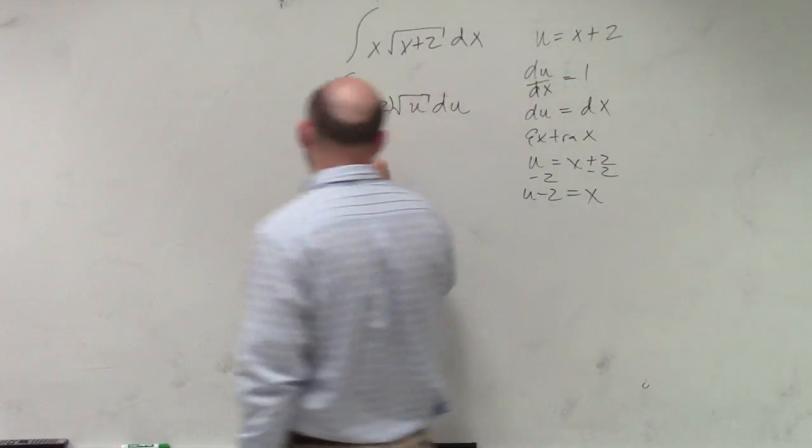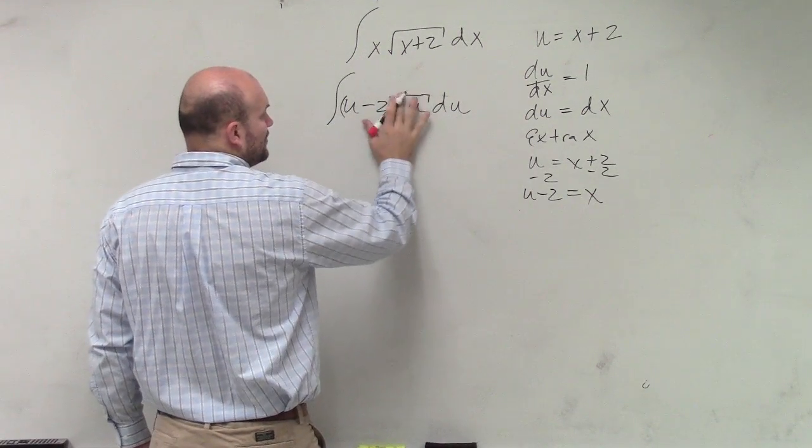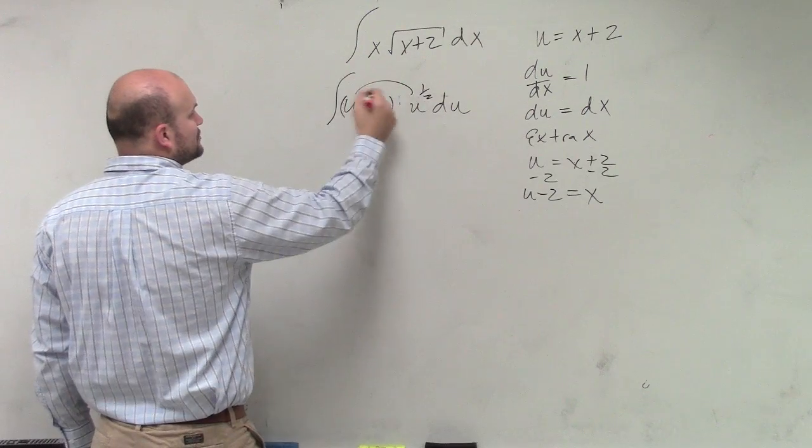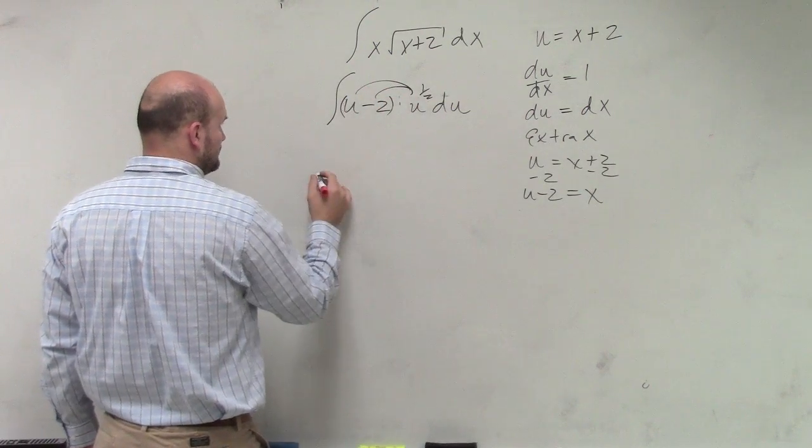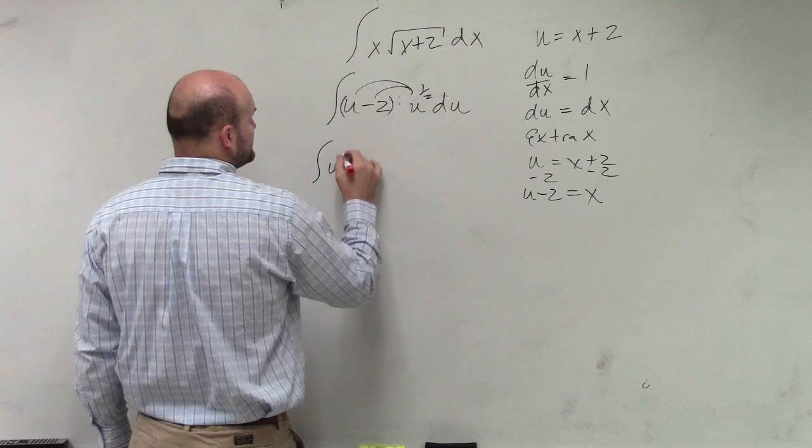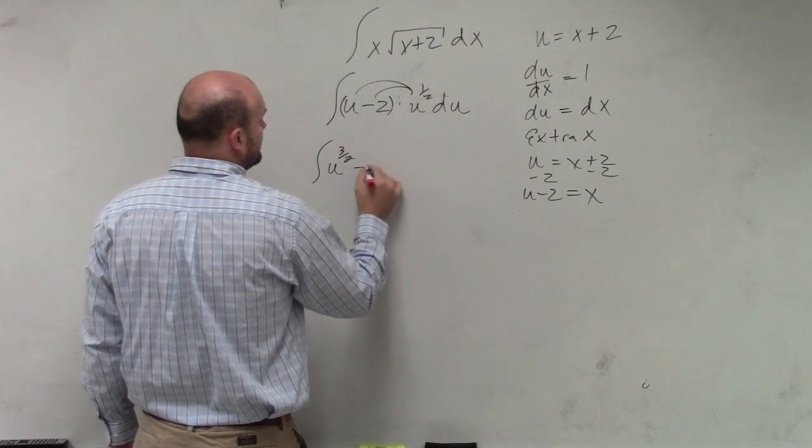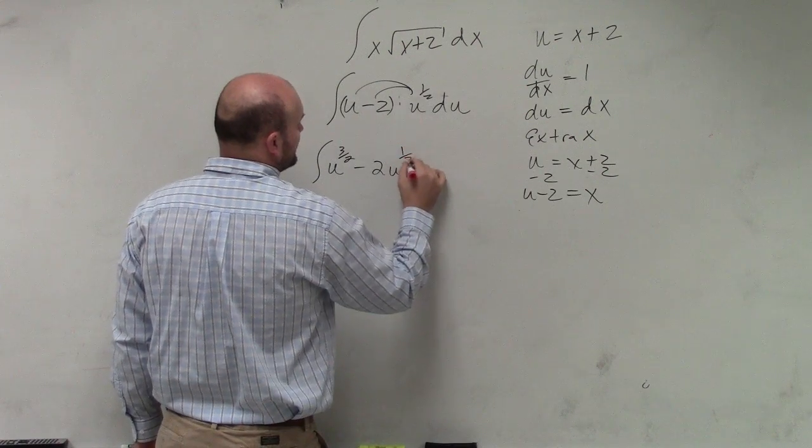So now, I can distribute this, I can rewrite this, instead of to the square root, I'll rewrite that to the one-half. Therefore, I'm going to apply the distributive property here, and therefore, I'm going to want to integrate u to the three-halves minus 2 u to the one-half.